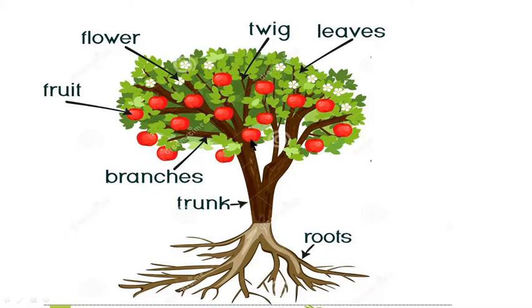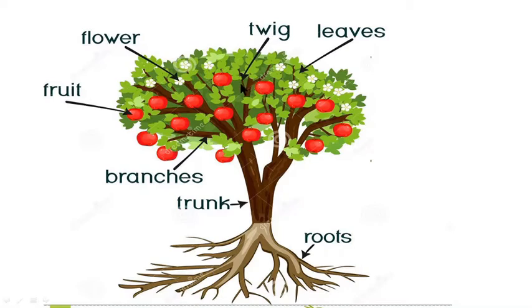And this is a tree. There are many parts of a tree. At the bottom are the roots. This main part is called the trunk. These parts are called branches. There is also fruit, flower, and twig — small or new branches are called twigs. And there are many leaves on the tree.